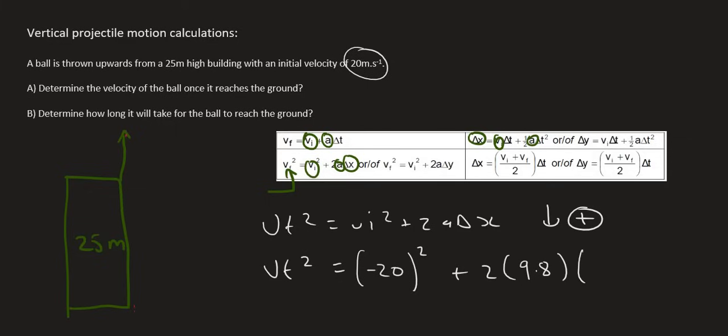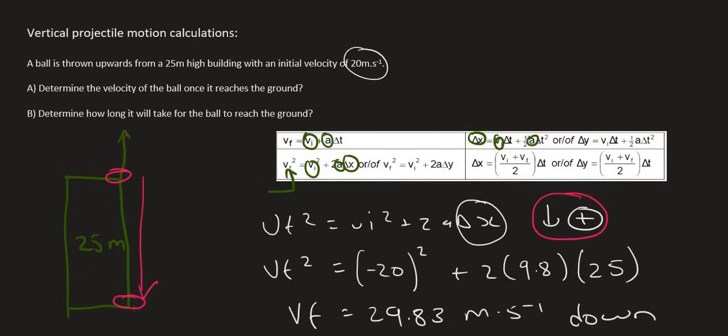Then, gravity is always 9.8 and we can keep it positive because we've chosen down as positive. And then, the displacement. Remember, this is not distance. The displacement is going to be a positive 25. Why positive 25? Because we're starting here and we're ending down here. Does that mean the object is ending below or above the place that it started? It's ending below. And because we chose downwards as positive, that will be a positive value. You then type all of this in on the calculator. Remember to take the square root. Your final velocity will be equal to 29.83 meters per second down.